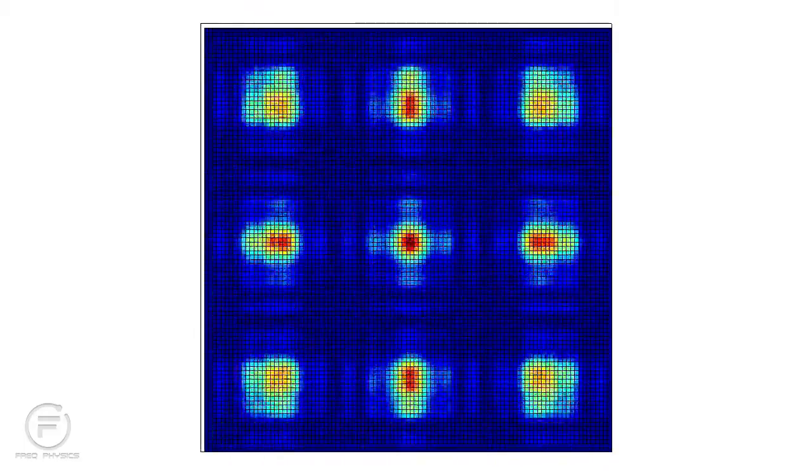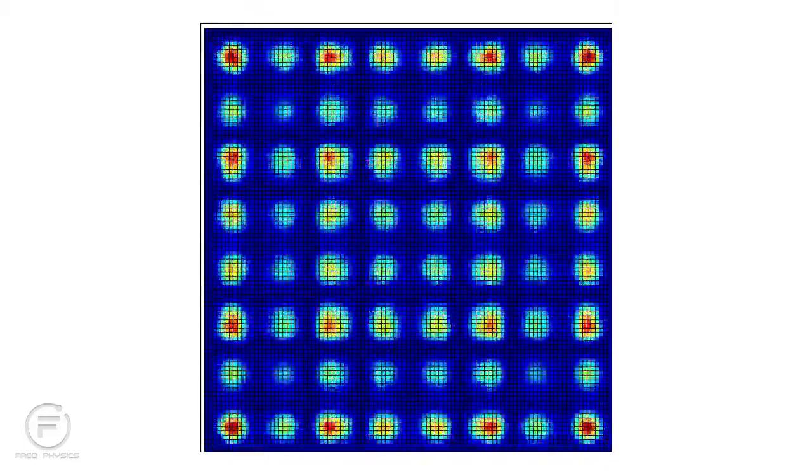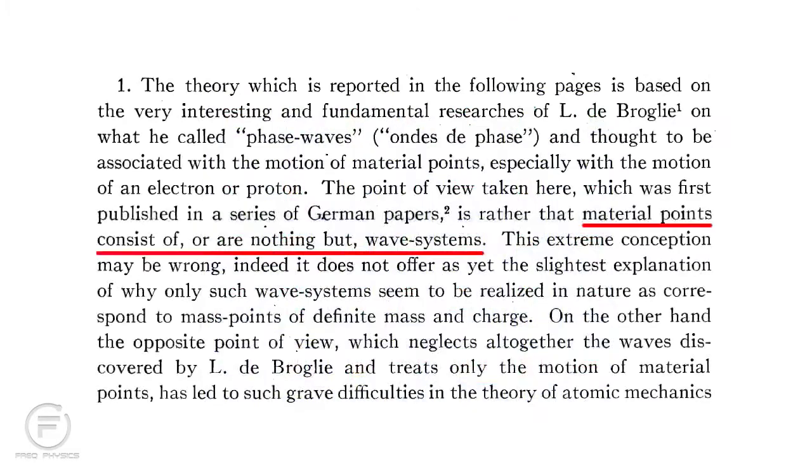Now the obvious question is, what are we looking at here? What do these images physically represent? Schrödinger's proposal was that material points consist of, or are nothing but, wave systems.